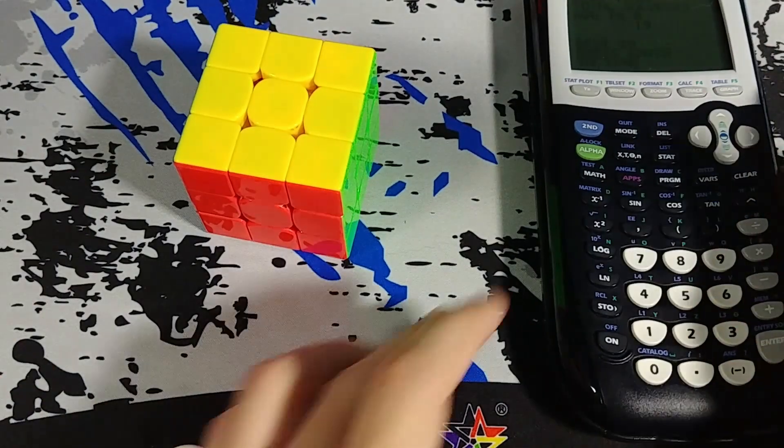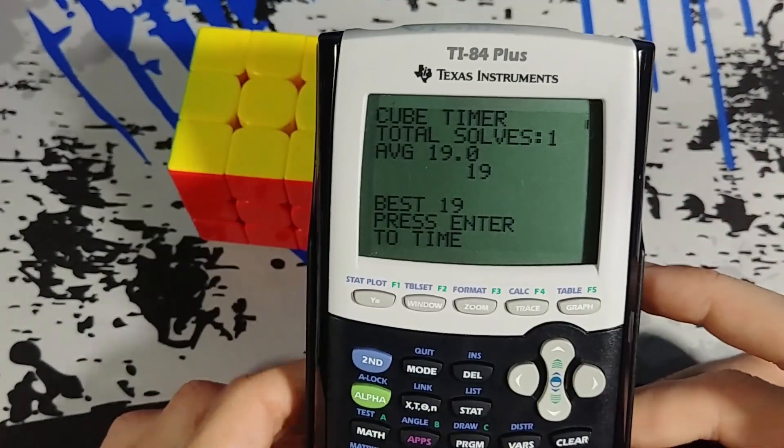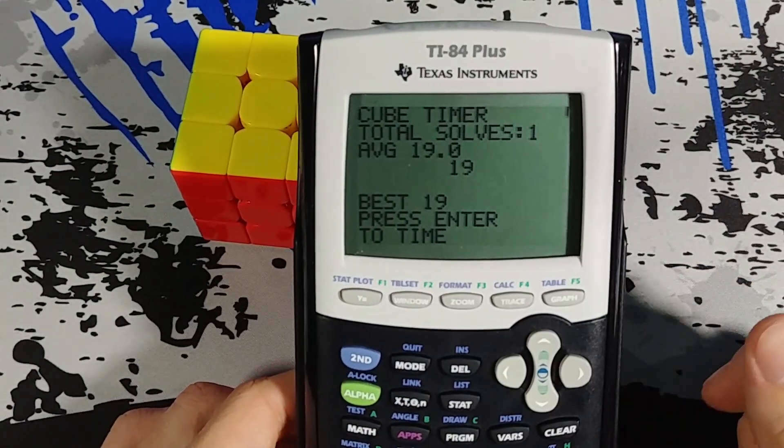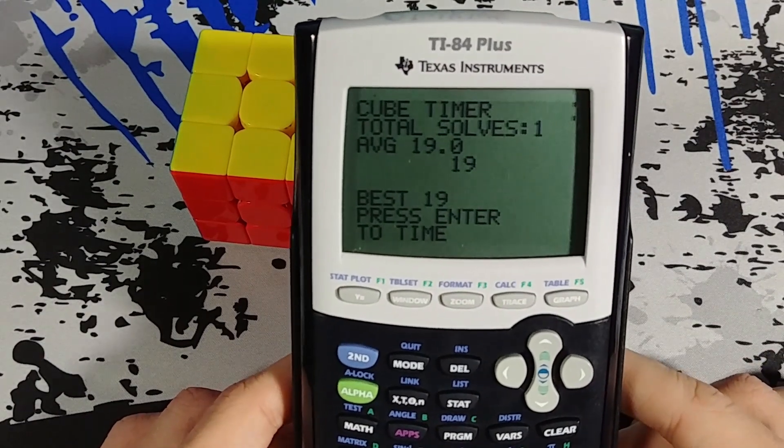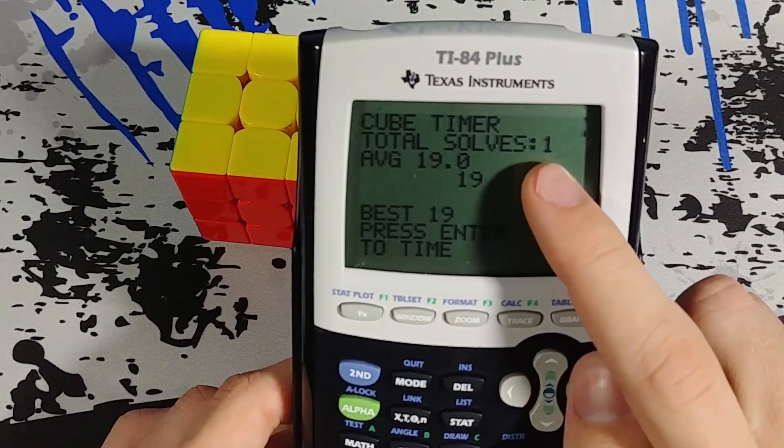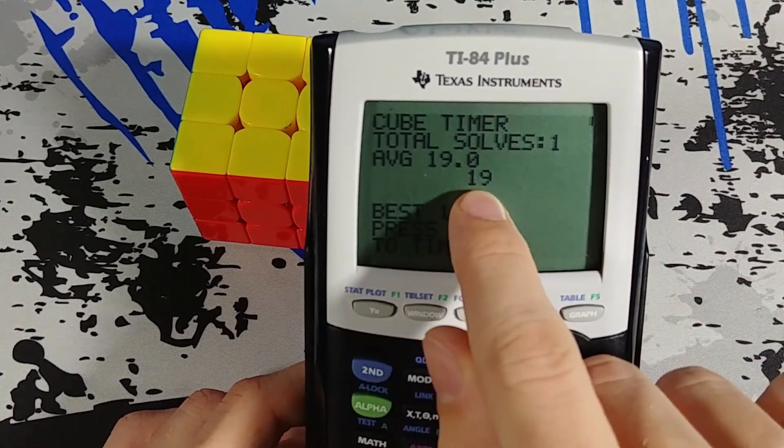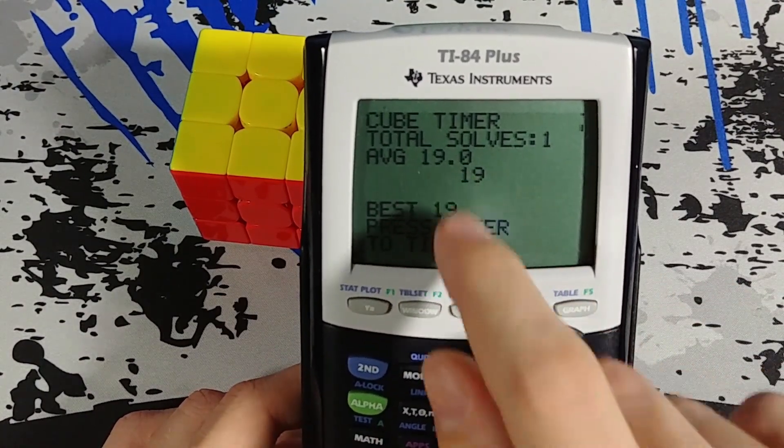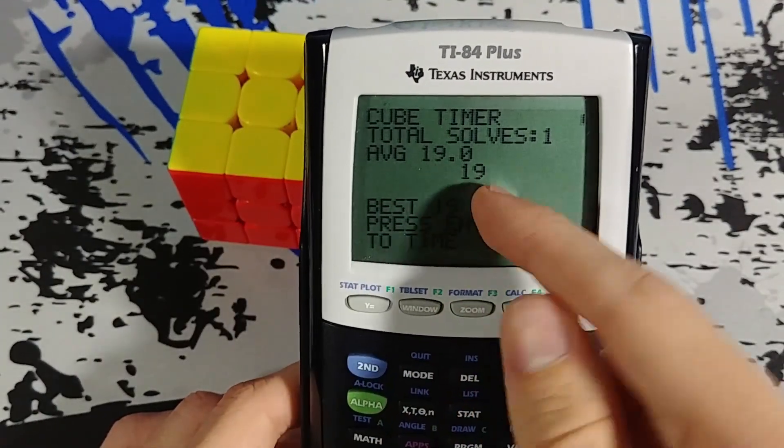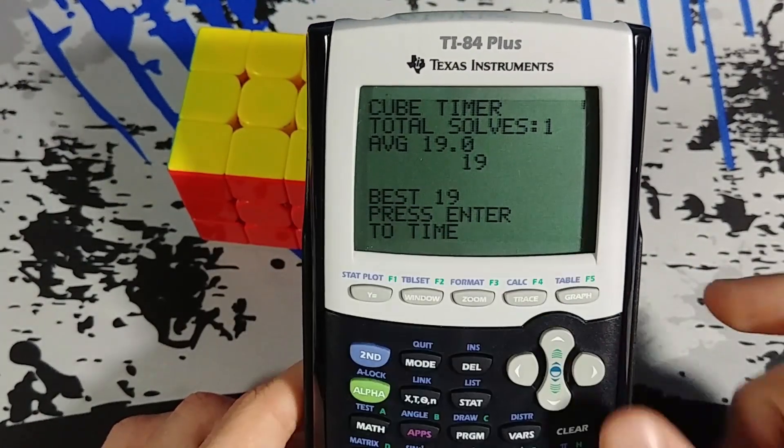Okay and we're done. We can press any button and the timer is stopped. So now you can see that my number of solves has gone up by one. My time stays in the center. So that's my current time is 19. My average is 19 because that's my only solve. And then my best time is 19.